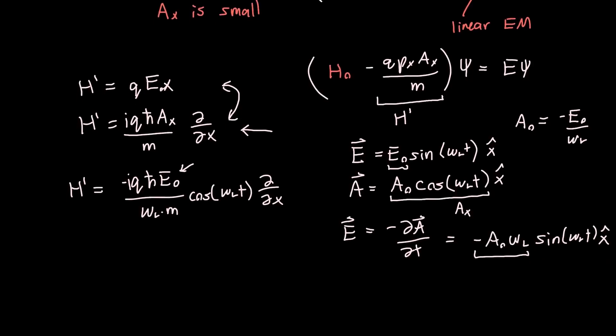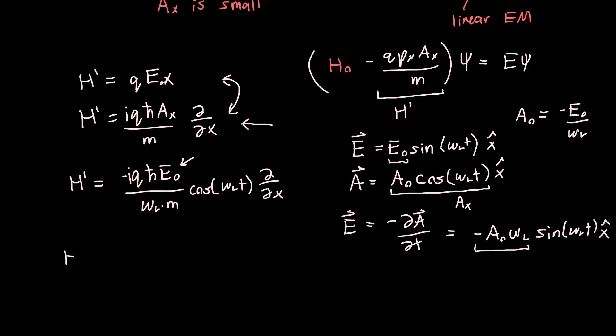So this is really nice - now we've got things in terms of the electric field. And if we compare this to what we had before, we had before that H' was just equal to qE₀x cos(ωₗt). The cosines haven't changed, but instead of an x here, and the qE₀ haven't changed, we've still got a q, we've still got an E₀.